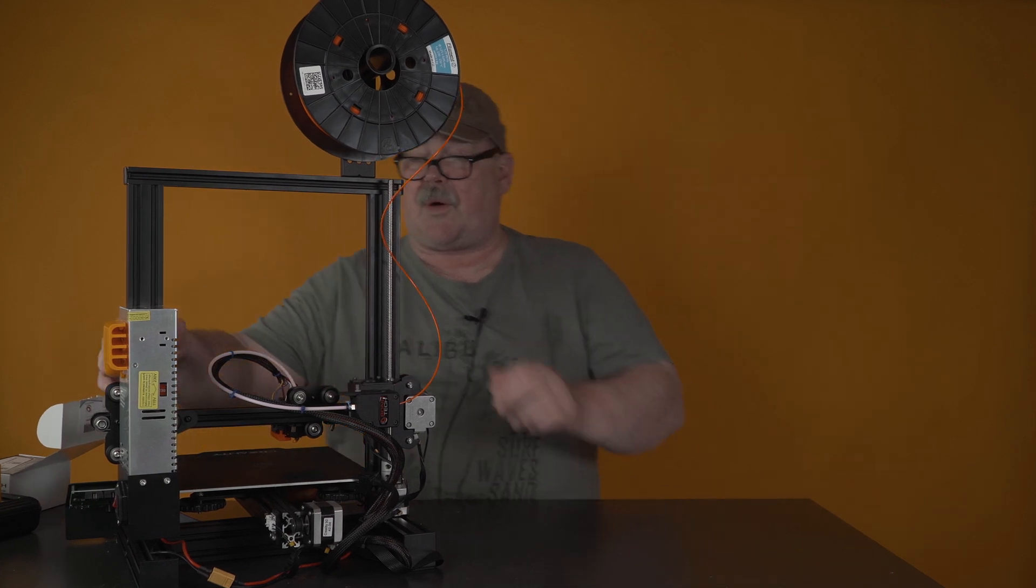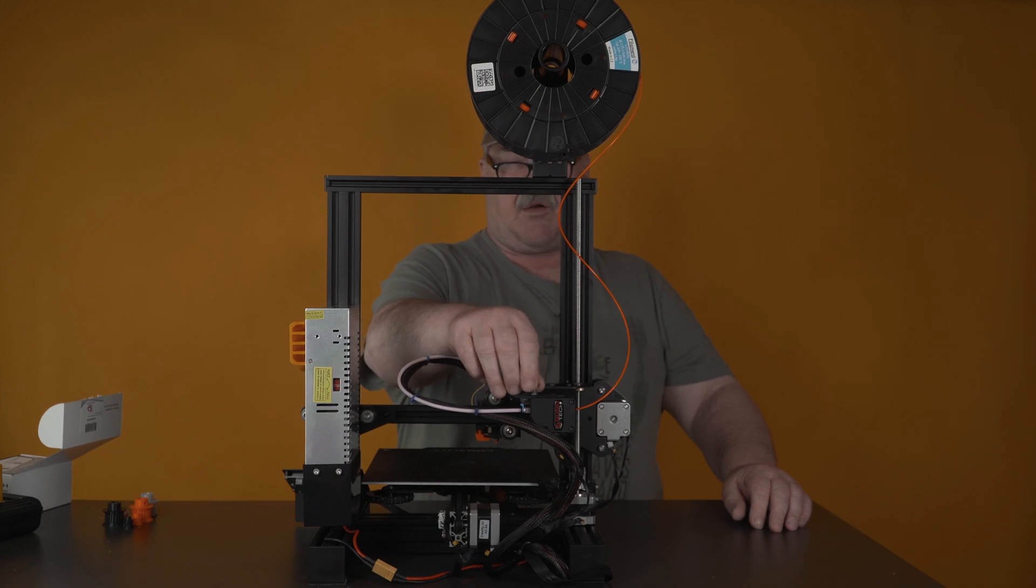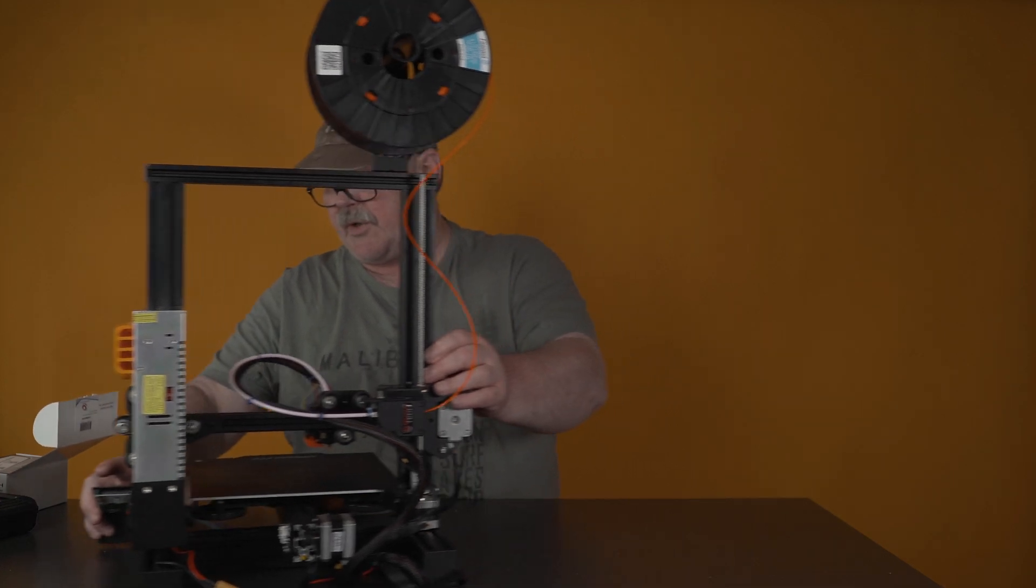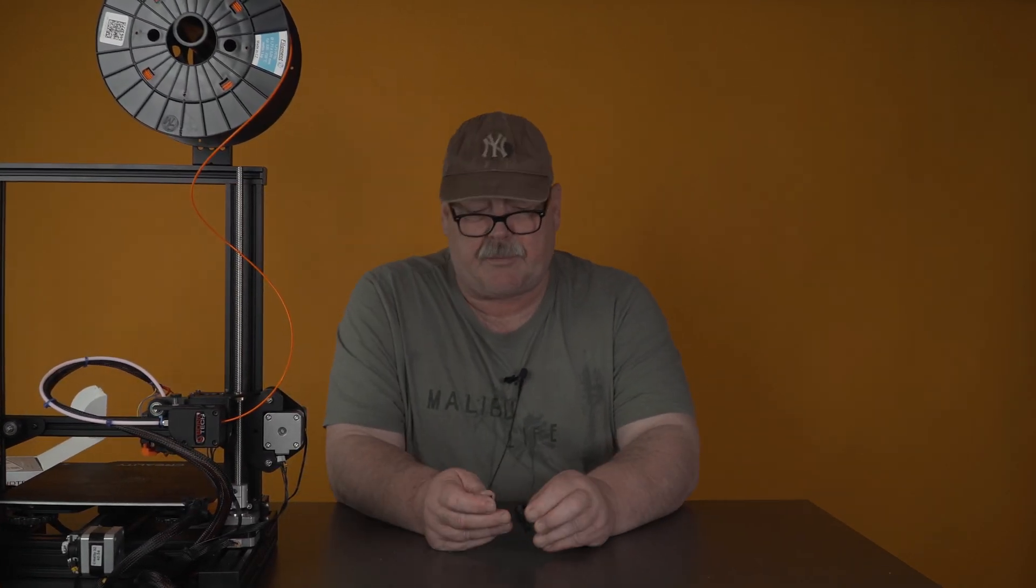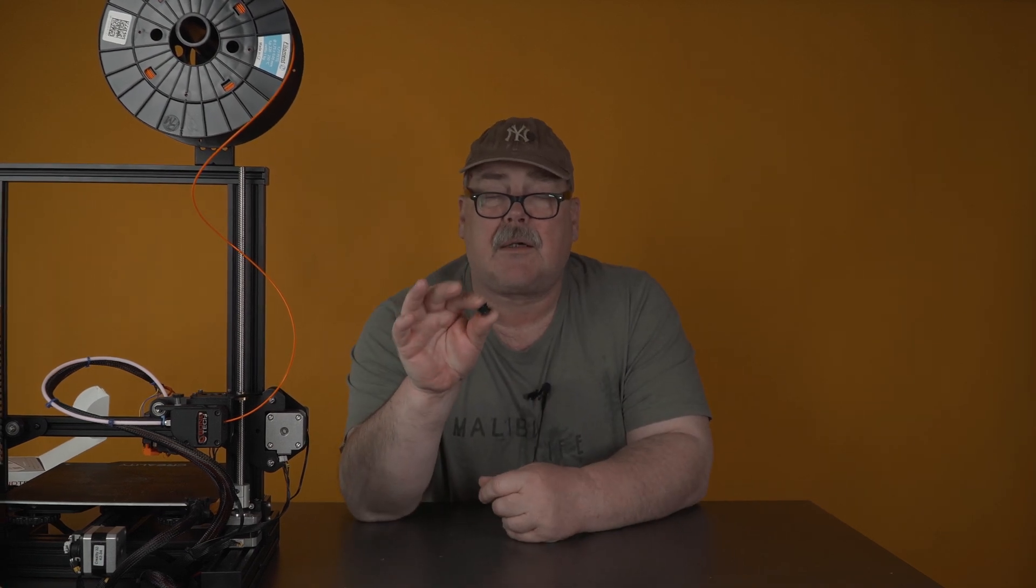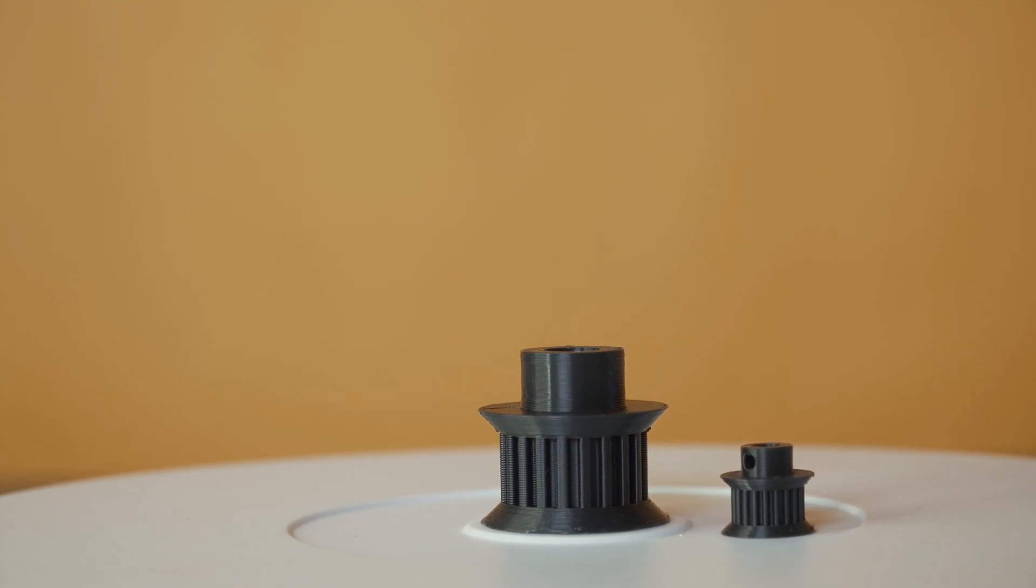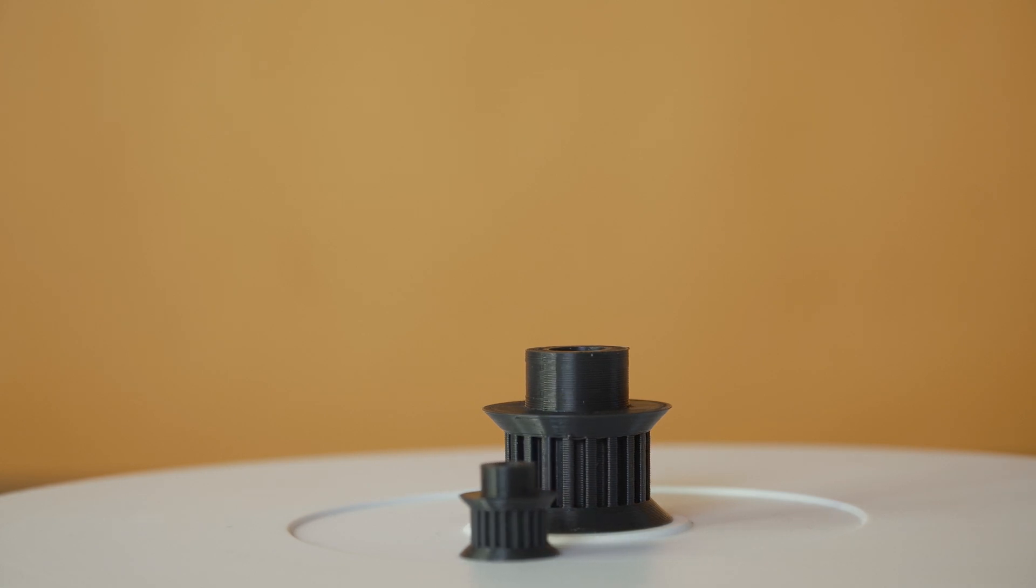So one of the things that I found out when I print the different types of filaments is how tight this should be. We will come back to that because first we want to look on a gear I printed. It's a belt gear and this is the original size. And as you can see, it looks quite amazing. It's printed in PLA and it came out very well.